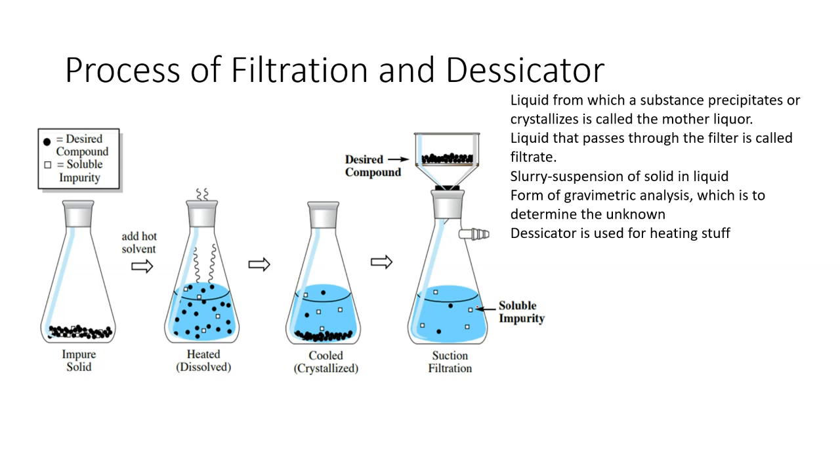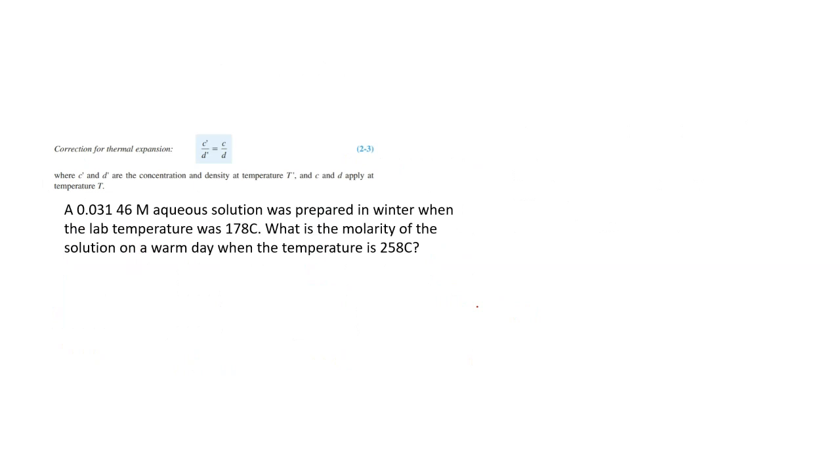I just put the desiccator here because I can't put it anywhere else in this PowerPoint, but desiccator is just used for heating stuff. We're going to end by talking about correction for thermal expansion. This is one form of math you need to know in this chapter. For the correction for thermal expansion, C' and D' are the concentration and density given to us at a certain temperature. While C and D will be applied at a temperature T.